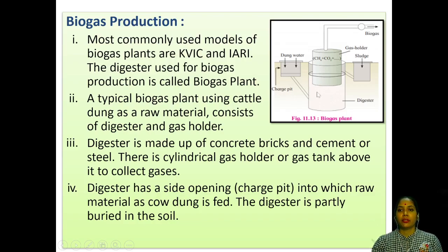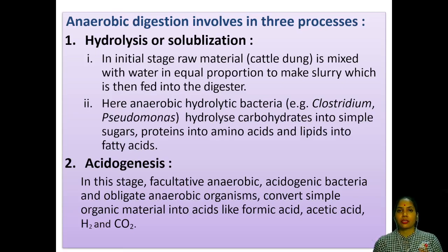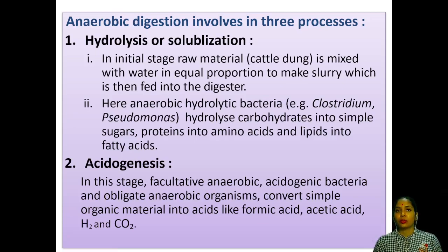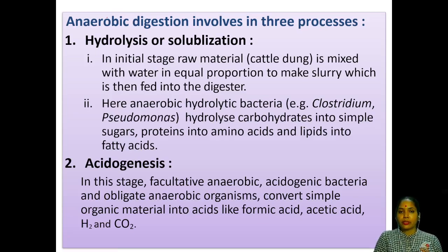Let us continue with Chapter 11, Enhancement of Food Productions, Lecture 8. Last time we discussed the biogas plant, where there is a pit dug under the ground. You can insert a ready-made cylindrical tank or make a cement tank, which should be partially submerged into the earth. One third part should be above the ground. There is a charge pit and a sludge pit where after the fermentation process the sludge comes out, and there is a cylinder holding the gas.